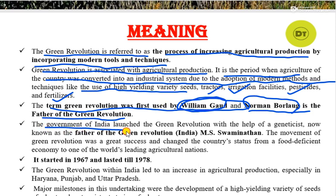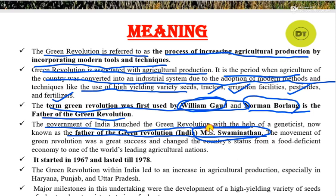The government of India launched the green revolution with the help of a geneticist, MS Swaminathan, who is known as the father of green revolution in India. So if you are asked to write the name of the father of green revolution in India, you have to write MS Swaminathan.